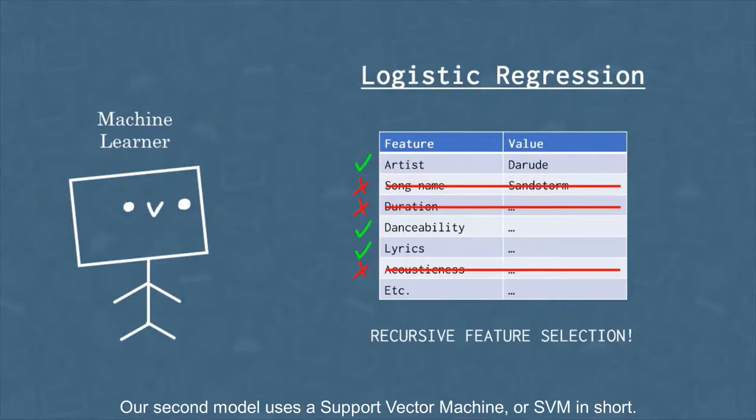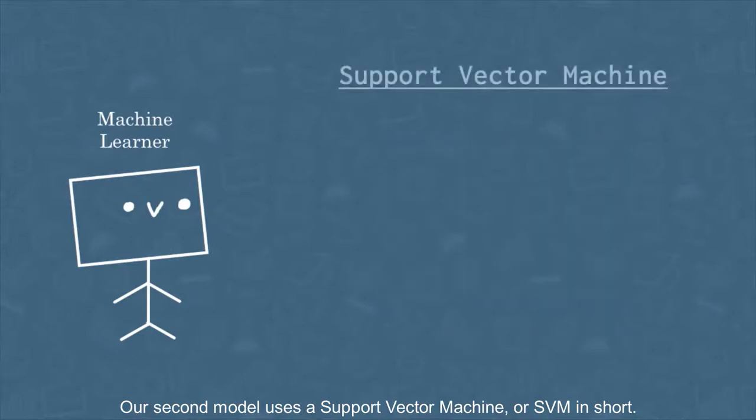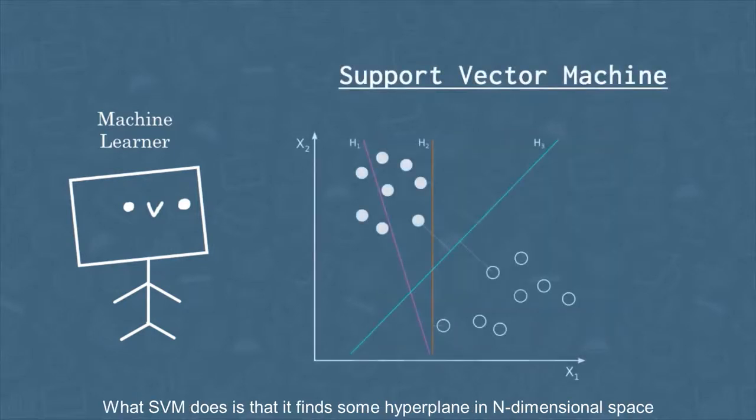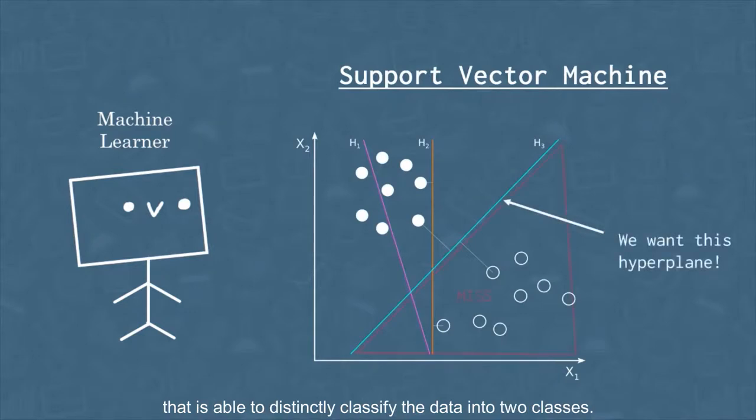Our second model uses a support vector machine, or SVM in short. What SVM does is that it finds some hyperplane in n-dimensional space that is able to distinctly classify the data into two classes.